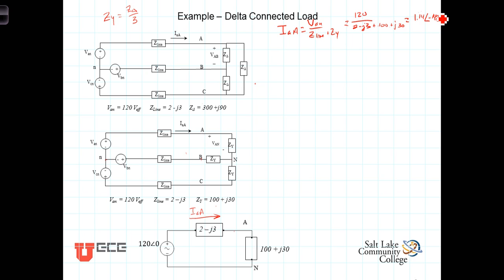A consistency check is appropriate at this point. We have a positive imaginary impedance load, which means this is an inductive load. In an inductive load — good old ELI the ICEman — voltage leads the current, or the current lags the voltage. The voltage V_AN is at angle zero, and the current flowing through this net inductive load is at −14.8°, so the current is indeed lagging the voltage.